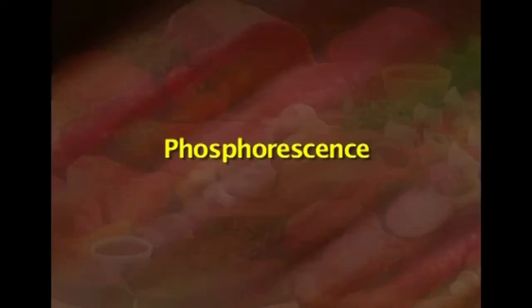The next kind of spoilage is phosphorescence, which is an uncommon defect caused by phosphorescent or luminous bacteria like Photobacterium species growing on the surface of meat.